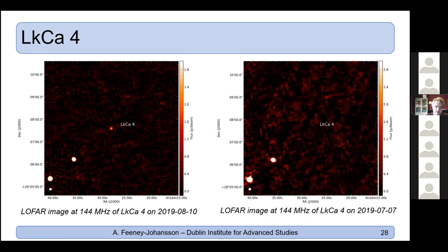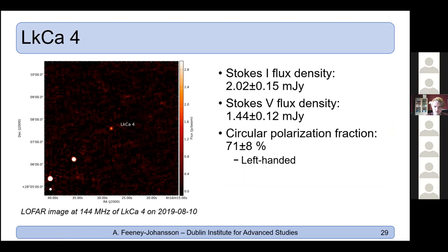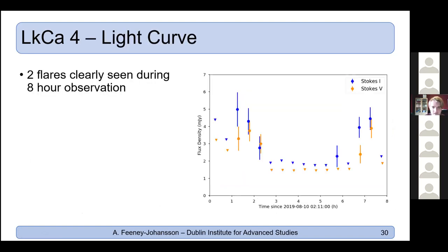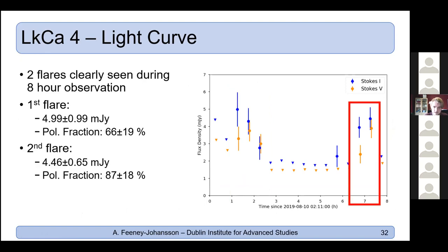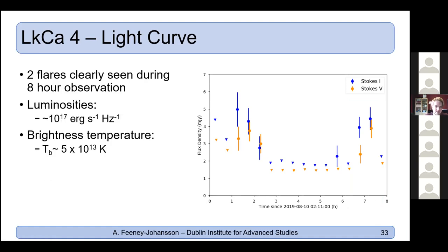Comparing two 2019 observations about a month apart for LkCa 4 confirms transient emission — the emission disappears in the second observation — with about 70% circular polarization. Dividing the observation into 30-minute steps reveals two flares, both peaking at about 5 milijansky. Luminosities and brightness temperatures are still very high: ~10^17 erg/s and ~10^13 K.